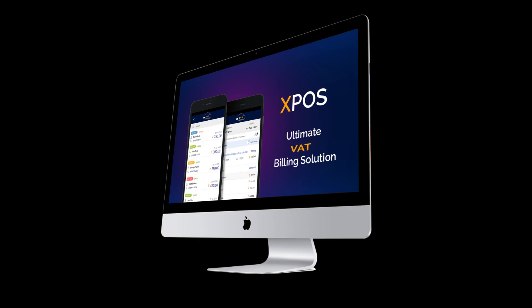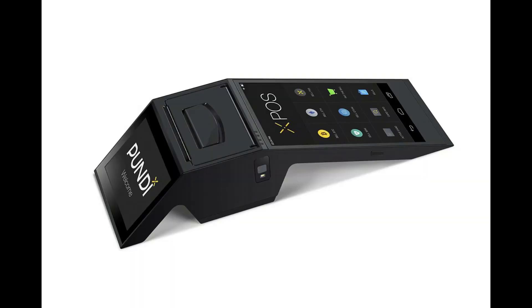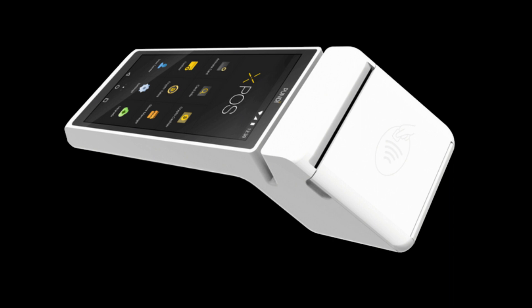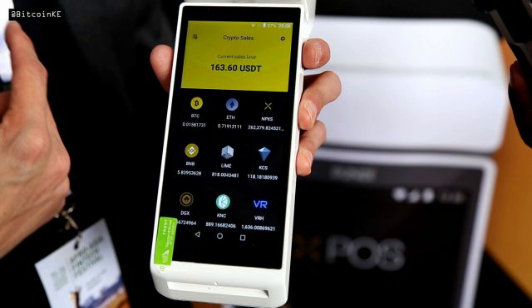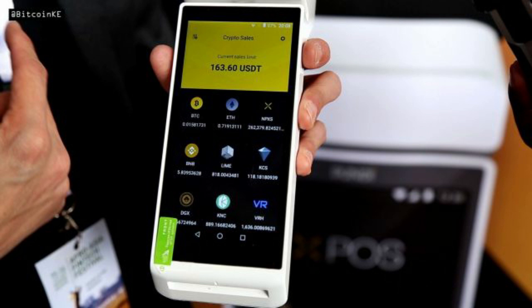XPOS will be upgraded once Function X is ready. XPOS will operate both as a decentralized point-of-sale device and much more — as a node. As a node, the XPOS will also be able to earn transaction fees and contribute to the decentralized network. X Phone, XPOS, and future smart devices powered by Function X will serve as Function X nodes, providing different services to the distributed data network based on their performance, location, storage capacity, and trust level.